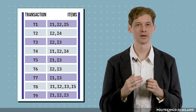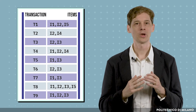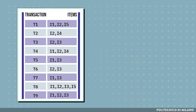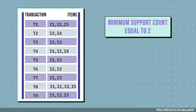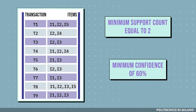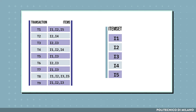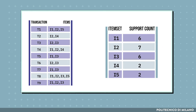Let's see now how it works with another example. In the table we see a set of 9 transactions, and for each one we have the items contained in each of them. We assume to be interested in rules with a minimum support count equal to 2 and a minimum confidence of 60%. The first step is to consider each item present in the dataset as a candidate set, and to compare its support count with the minimum support count threshold.